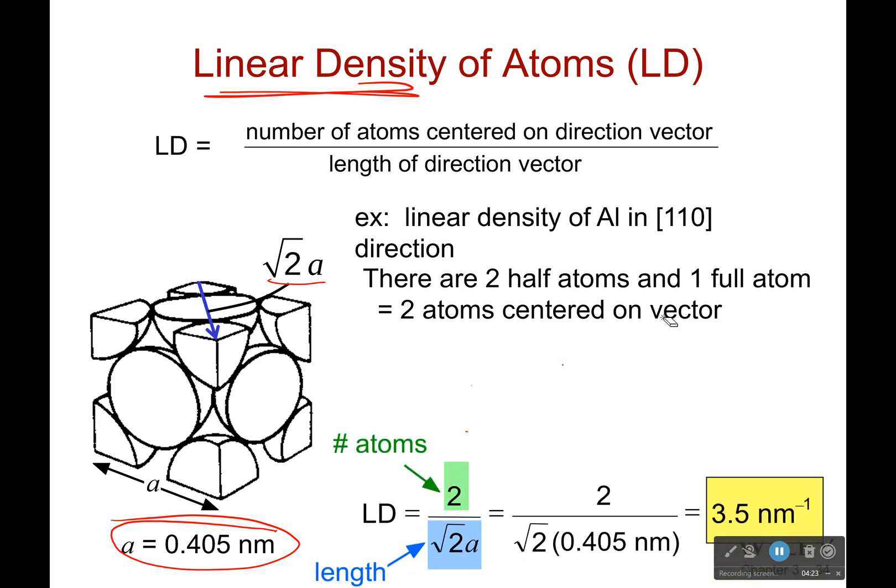Number of diameters. So the number of atoms, two, over the length, which is √2 × 0.405, which will be 3.5 nanometers to the negative first, or 3.5 nm⁻¹.